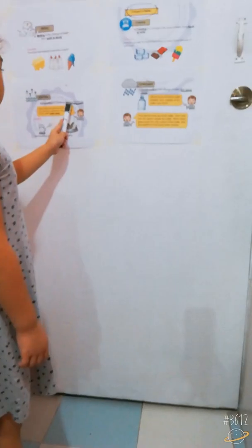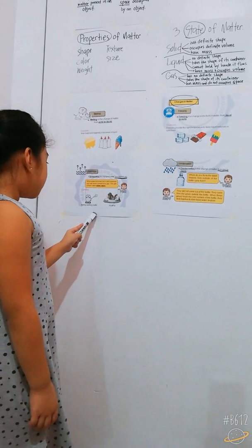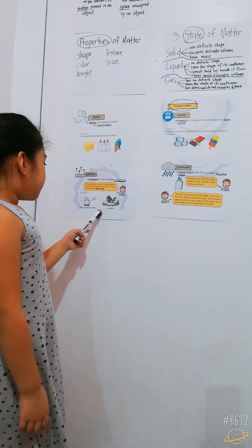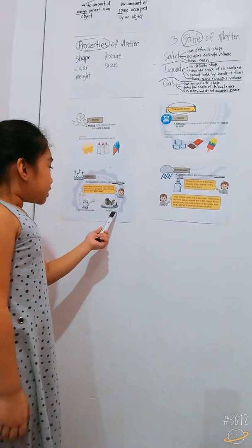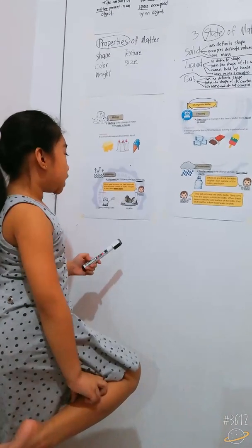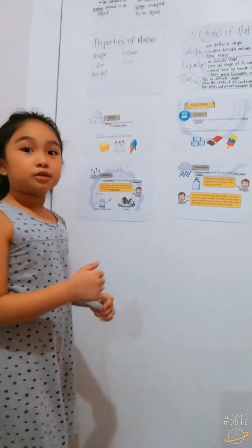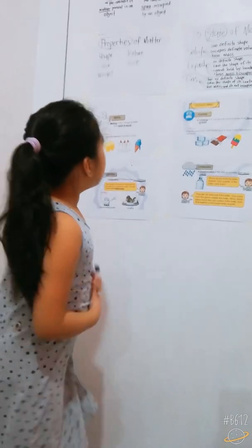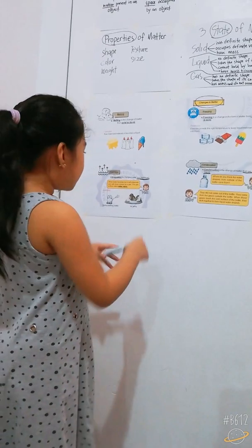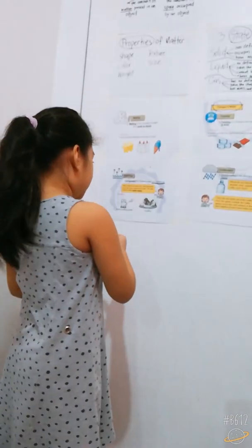Evaporation is liquid to gas. You can see this in a boiling kettle and a hot spring. Can you see those white things coming from the hot spring? Those are smoke, and smoke is gas.